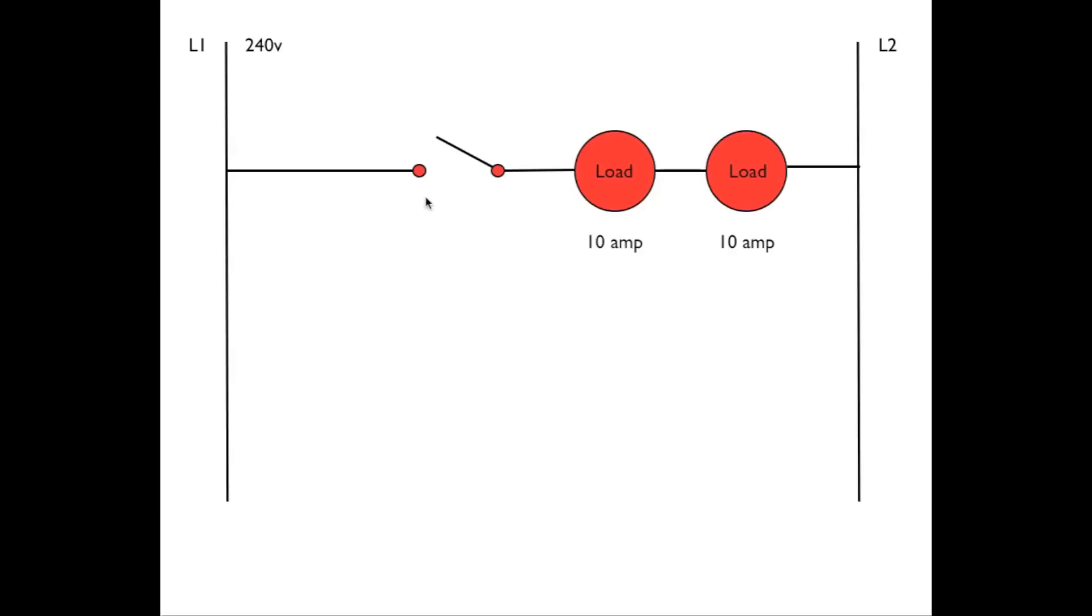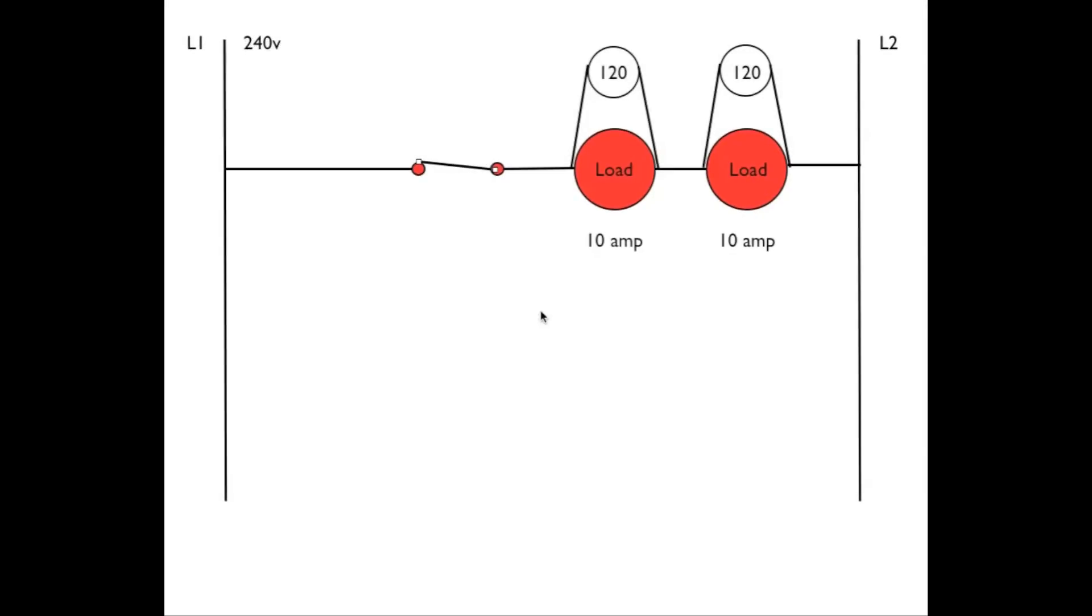So when I close the switch, I'm going to have a voltage drop across each of these loads. Let's go ahead and see what it's going to be. Here you can see I've closed the switch. Because we have two identical loads, each of these are 10 amp loads, we have 120 volts drop across each one.